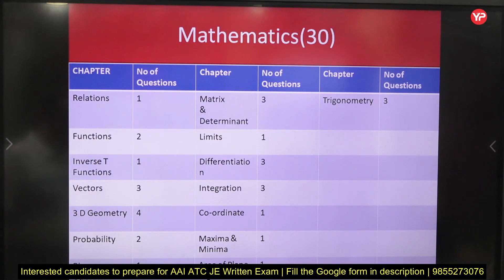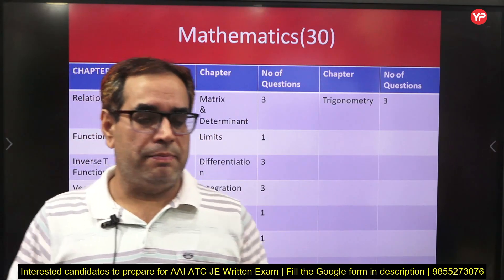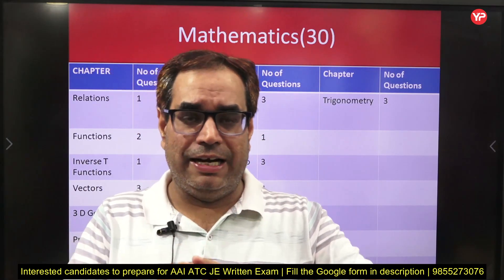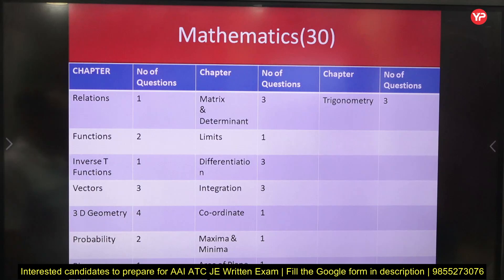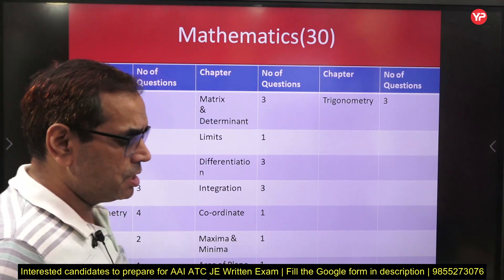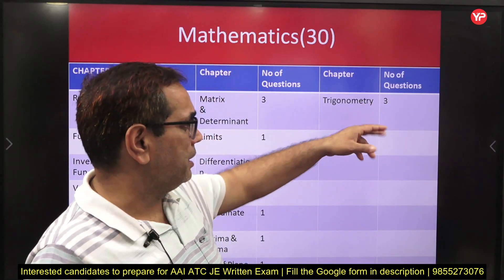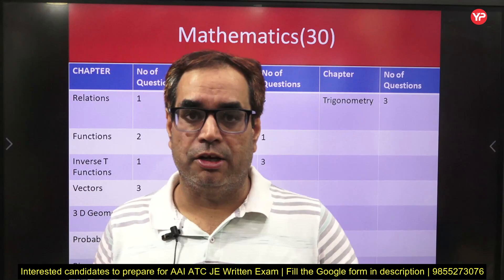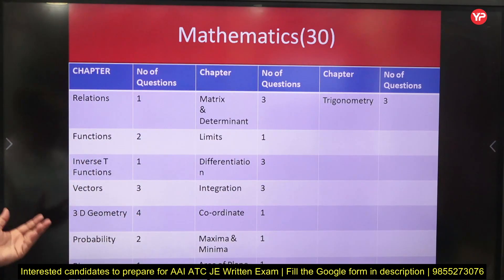Area of Plane Regions — always a question is asked from this topic. You should know how to compute the area between a straight line and a parabola. In Trigonometry — trigonometric equations and trigonometric identities — three questions were asked and you can expect three questions from this topic. These are the main topics of mathematics.